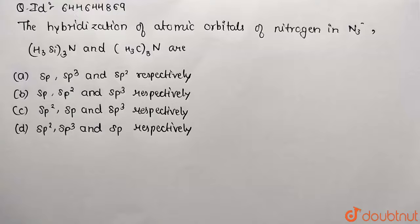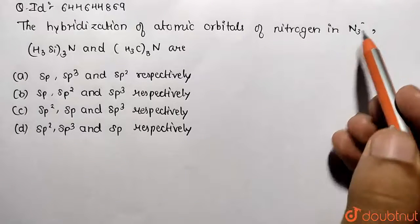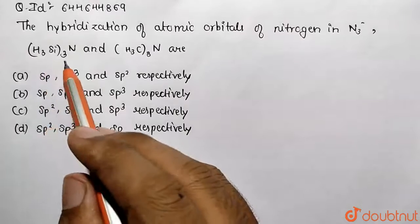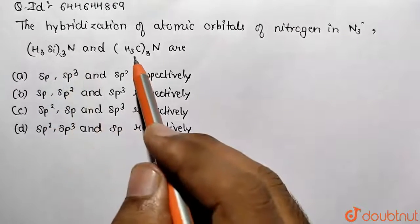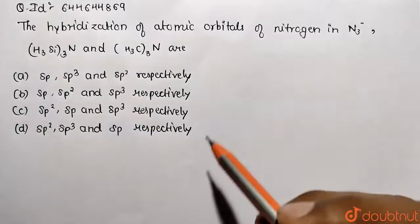You need to check the hybridization of atomic orbitals of nitrogen in N3-, then (H2Si)3N and (CH3)3N. So these are the molecules given to us. Basically identify the hybridization of nitrogen.